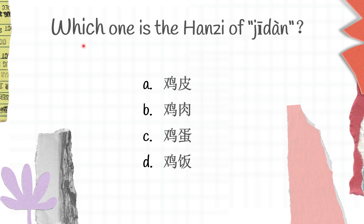The next question: which one is the Hanzi of 'jītàn'? Can you guys point it out for me? A is jìbì, B is jīròu, C is jītàn, and D is jīfàn. This is actually a little bit tricky because we use 'jī' for all the options. Jītàn here is C.